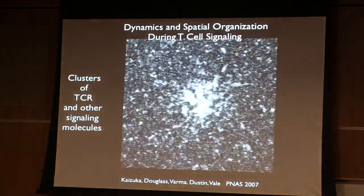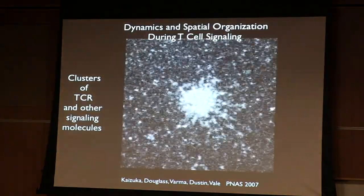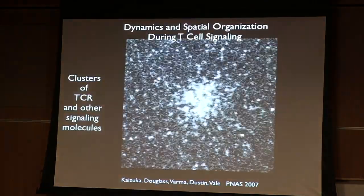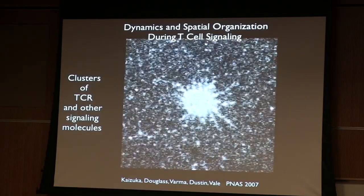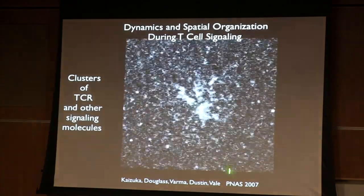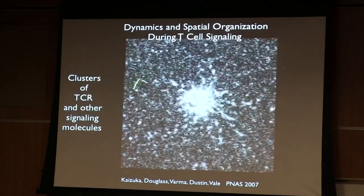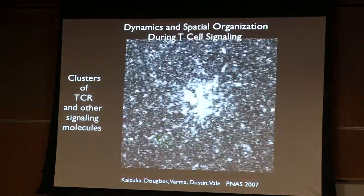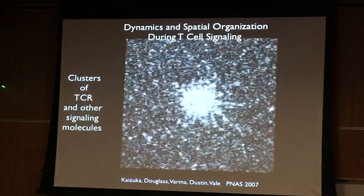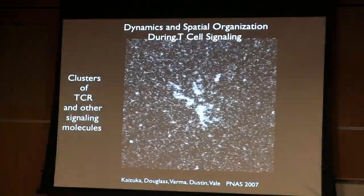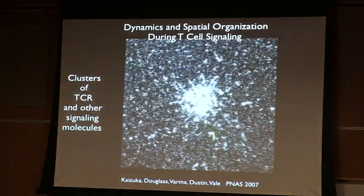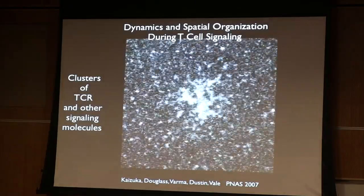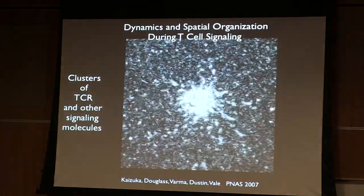In addition to the ligand-receptor interaction, there is a lot of spatial reorganization of components that happens during T cell receptor signaling, observed for years by various labs. Here we're visualizing on the surface of a T cell the T cell receptor interacting with a ligand on a planar lipid bilayer. You can see that the T cell receptor gets organized into little clusters containing dozens or even hundreds of T cell receptors. They also move to the central domain by actin flow. We need to understand why there's this spatial organization and why things come together in these big clusters.